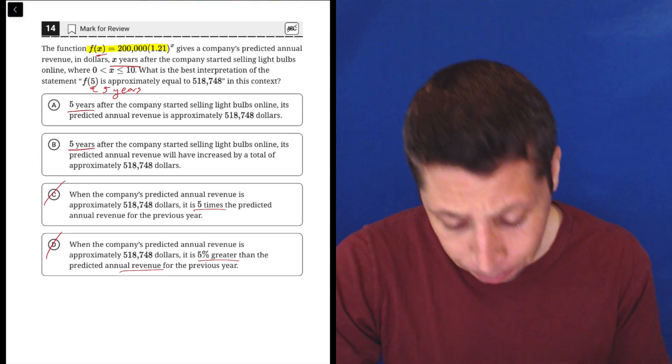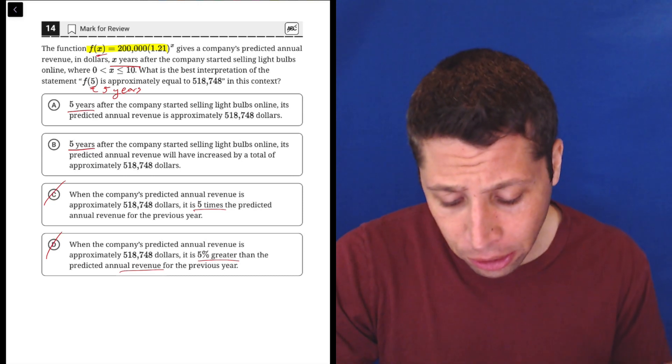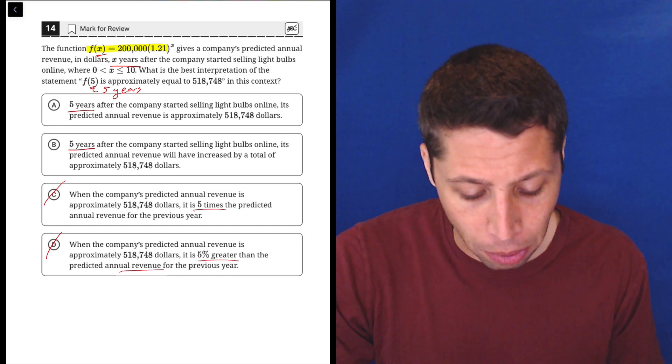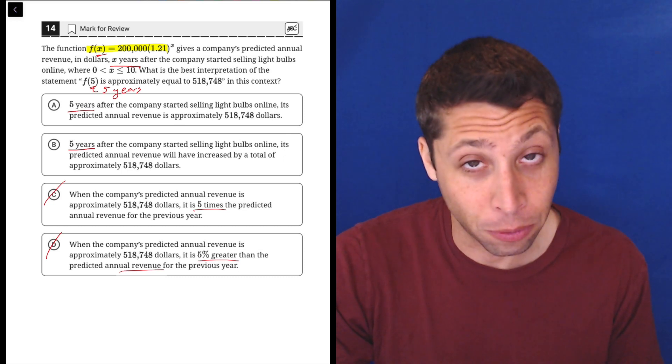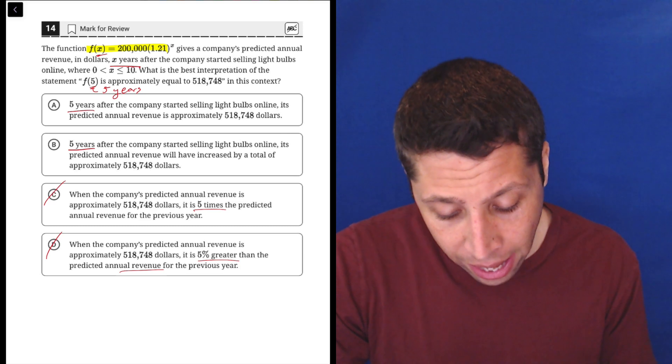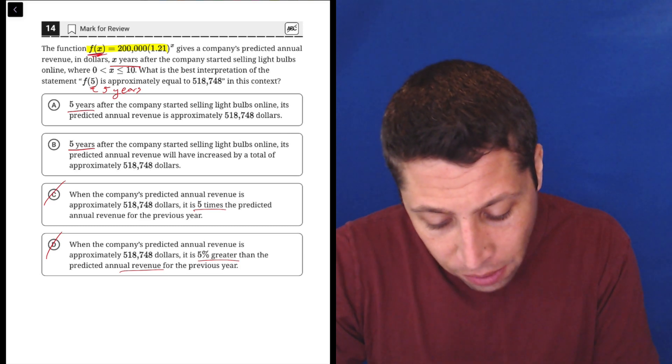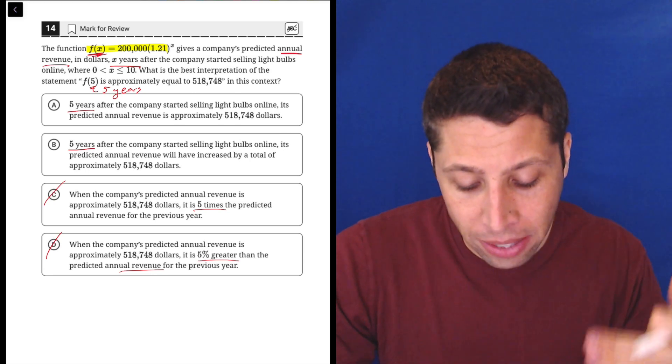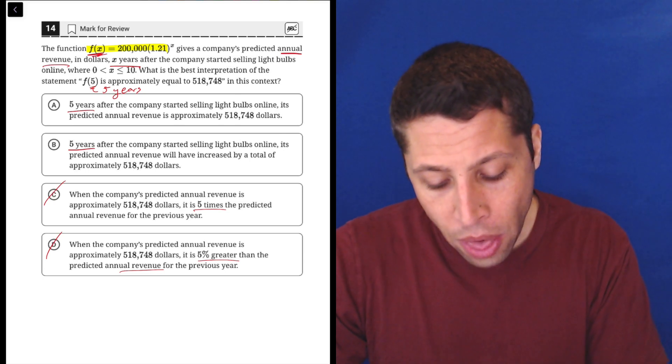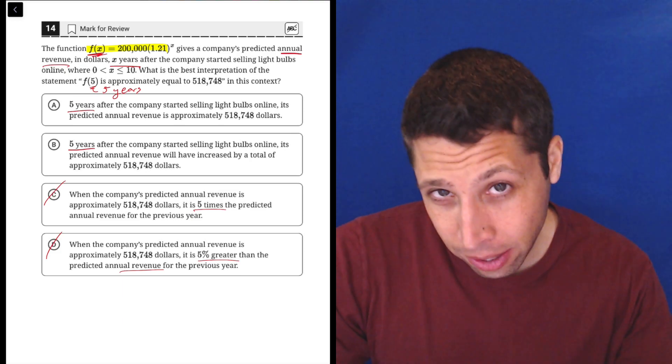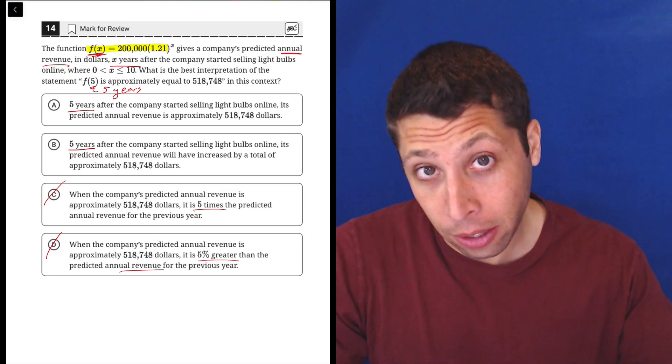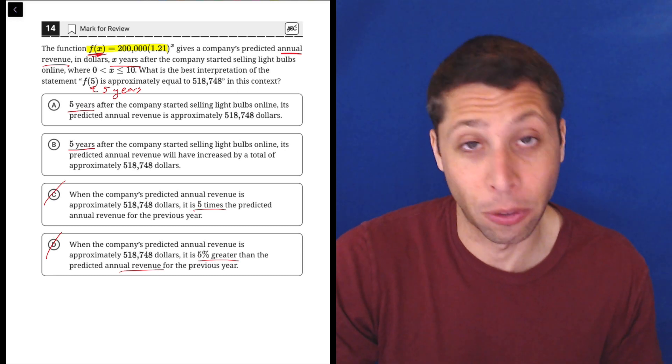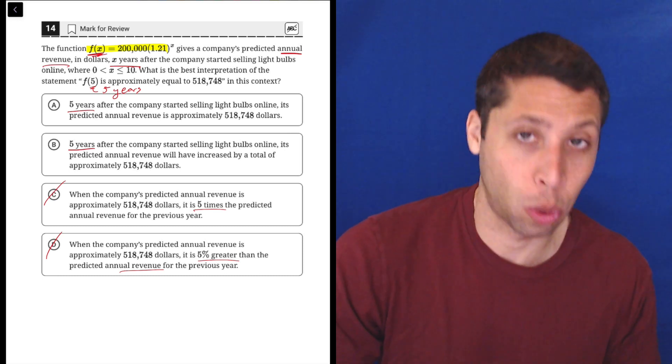Now, the key piece is just reading these two choices and thinking now about how this equation works. So let's look at choice A. This represents five years after the company started selling light bulbs online. Its predicted annual revenue is approximately $518,748. And that kind of makes sense, because they said that f of x, the function, gives the annual revenue. So basically, if five is the x, then what we get out of this is the revenue in dollars. So after five years, we're going to make $518,748. That's basically what choice A is saying.